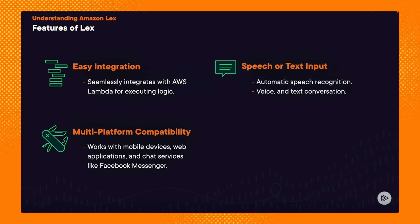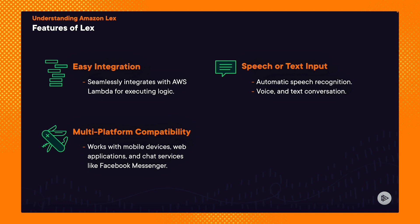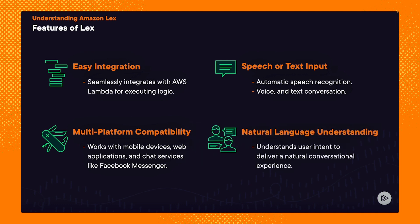Number three is a service used to add chatbot capabilities to your applications, and it's called Amazon Lex. If you've ever interacted with an automated customer service bot online, then you've probably been interacting with Lex. It accepts voice or text input and works with mobile devices, web applications, and chat services like Facebook Messenger. Lex can be used to create virtual agents to arrange customer refunds, flight changes, messages, or password resets, or provide automated responses to frequently asked questions on your website.